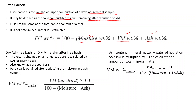Moisture, volatile matter, ash and fixed carbon have all been calculated on an air-dried basis, meaning the powder was simply left in air to dry under a controlled environment of 40 degrees Celsius temperature and 60 percent humidity. After being air dried, there are two more ways to calculate the volatile matter: the dry ash free (DAF) or dry mineral matter free (DMMF) basis, also known as the pure coal basis.